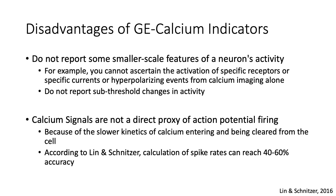Lastly, let's discuss the disadvantages of genetically encoded calcium indicators. First, these sensors do not report some of the smaller scale features of a neuron's activity. For example, you cannot ascertain the activation of specific receptors, specific currents, or hyperpolarizing events from calcium imaging alone. These sensors also do not report sub-threshold changes in activity. Most importantly, calcium signals are not a direct proxy for action potential firing, because of the slower kinetics of calcium entering and being cleared from the cell. According to Lin and Schnitzer, calculation of spike rates can reach 40-60% in accuracy. Thank you.